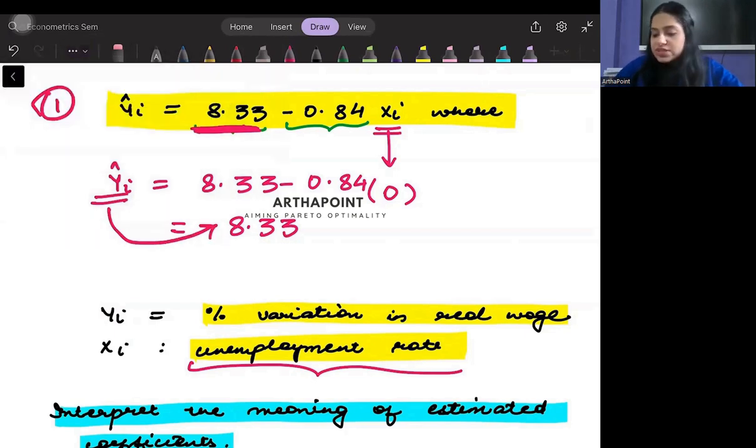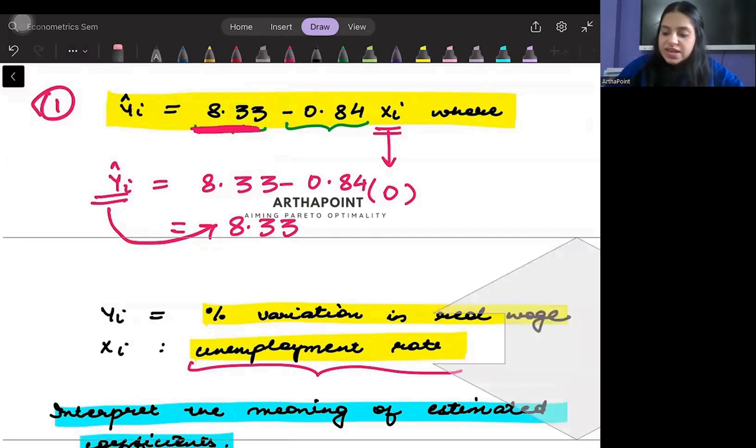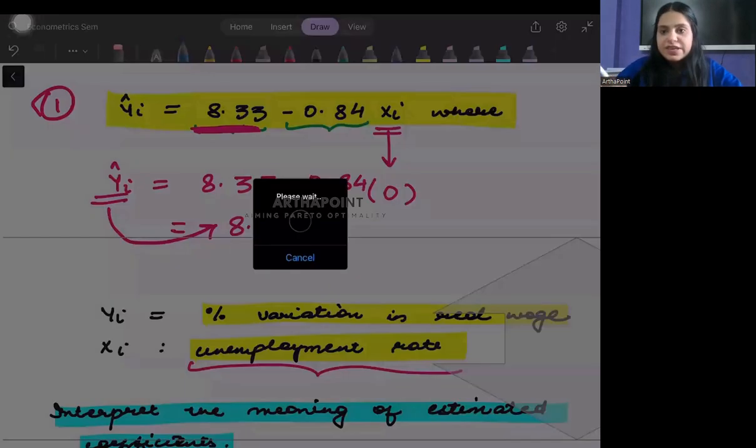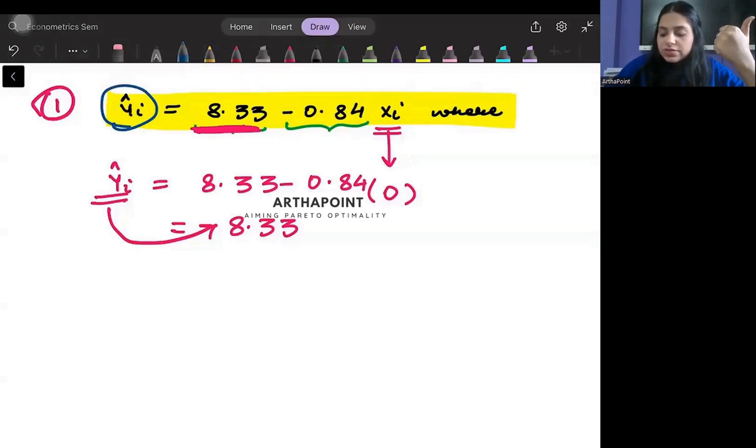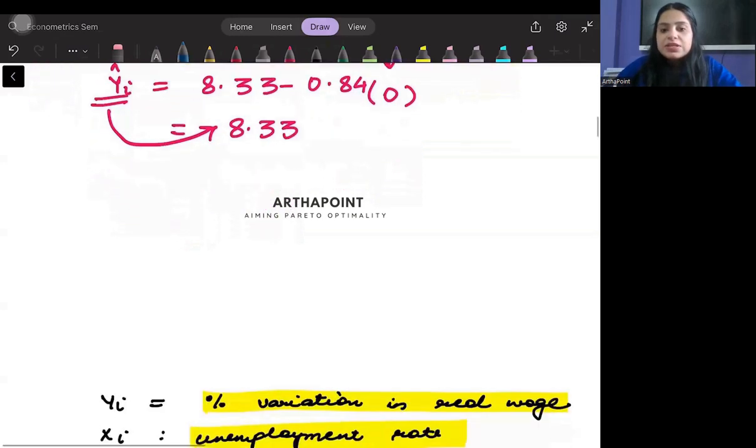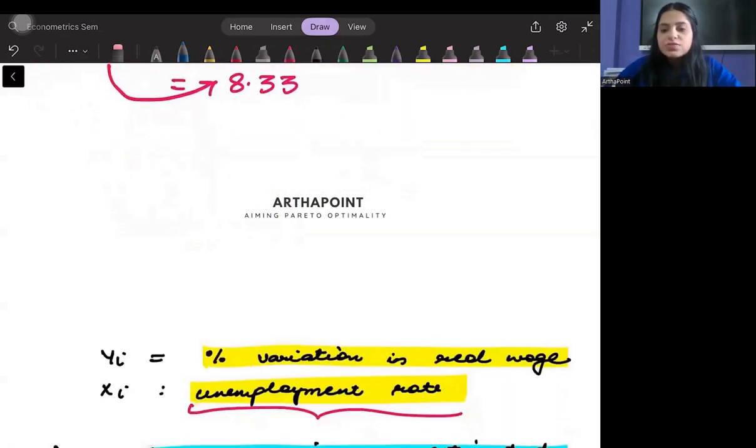Also notice that there is a negative sign that we can see between the real wage and the xi. There is a negative sign and negative sign means that there is inverse relation between real wage and unemployment rate.